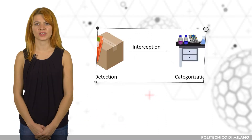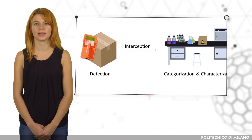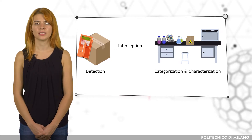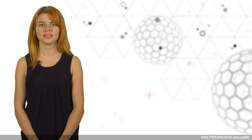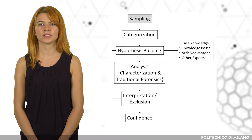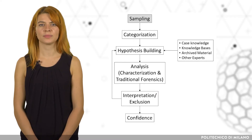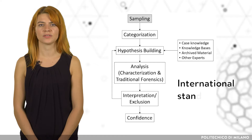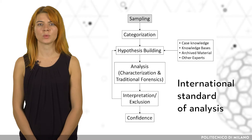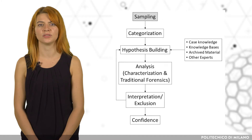Nuclear forensics has to be considered as part of a comprehensive set of measures for detection, interception, categorization and characterization of a nuclear material. In case of an illicit seized material, after the detection of undeclared radioactivity, a graded iterative process begins. This process is described by the Model Action Plan, which was developed by the International Technical Working Group and was designed to secure international standards in the analysis of illicit nuclear material.